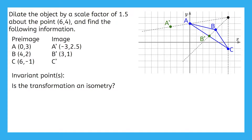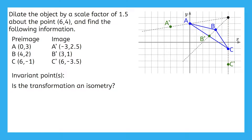Now we can move on to point C. We notice that there isn't a horizontal movement from the center of dilation to point C, which actually makes finding C prime much easier than the others. Point C is 5 units down from the center of dilation. Multiplying this by 1.5 gives us down 7.5 units. Moving down from the center of dilation 7.5 units allows us to place C prime at the point (6, -3.5). Then we can sketch in the entire image. All points on the pre-image move somewhere new to become the image, so there are no invariant points. Also, the transformation is not an isometry because it does not maintain its original size.